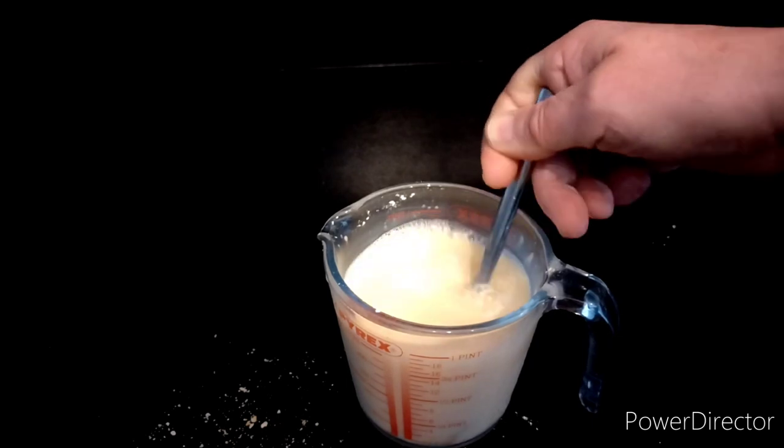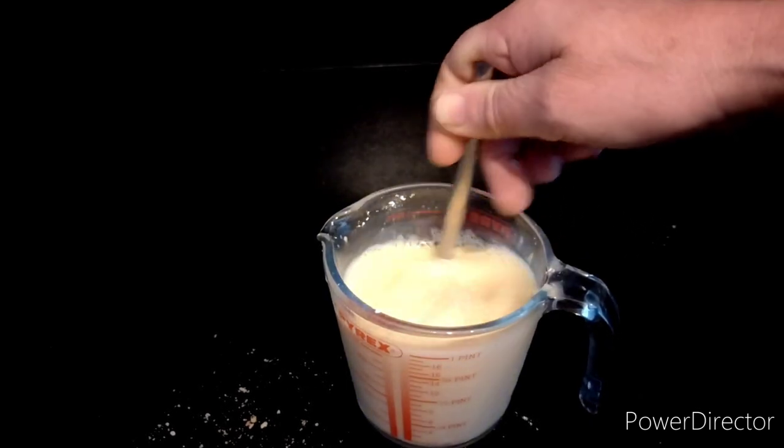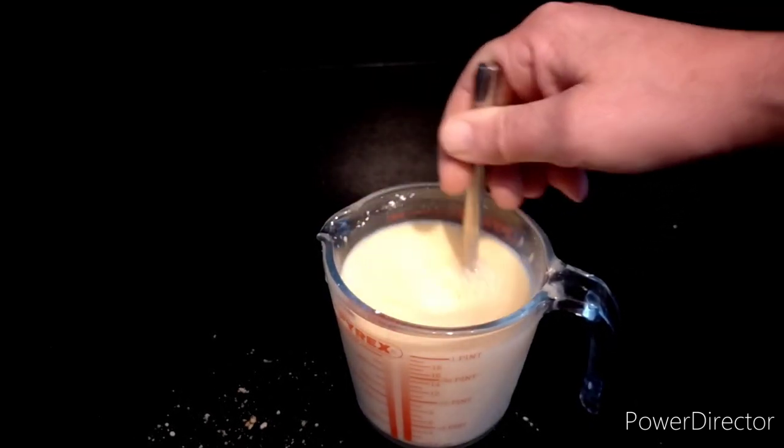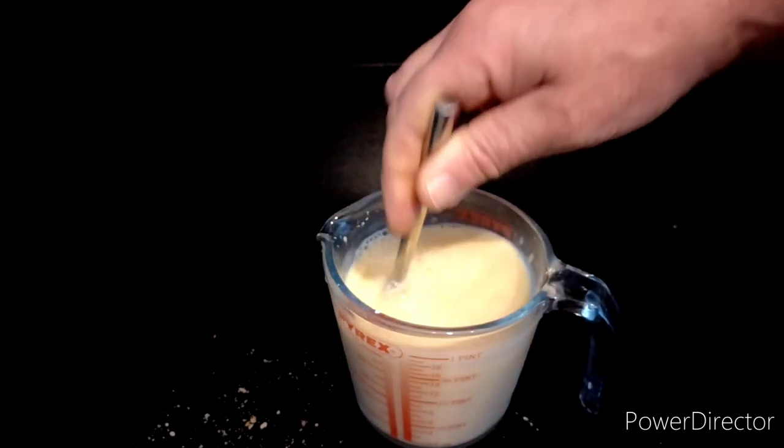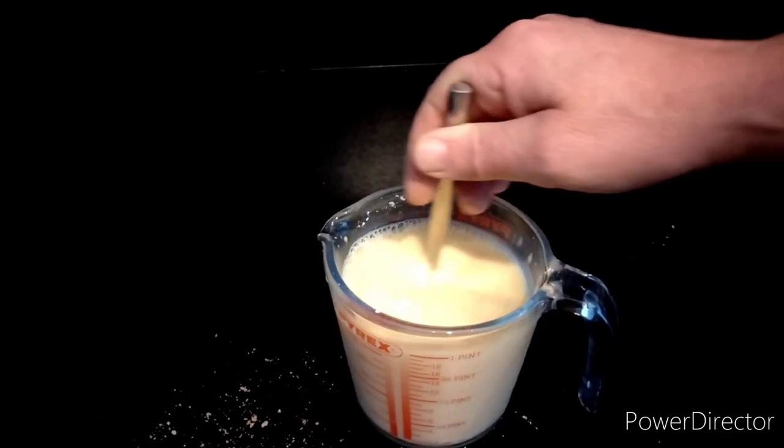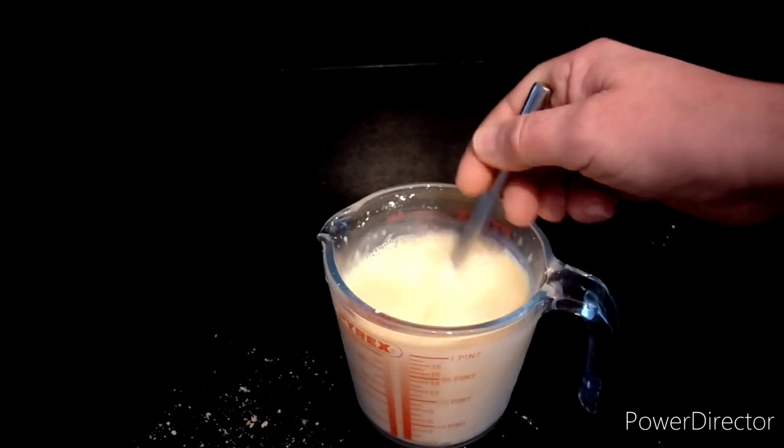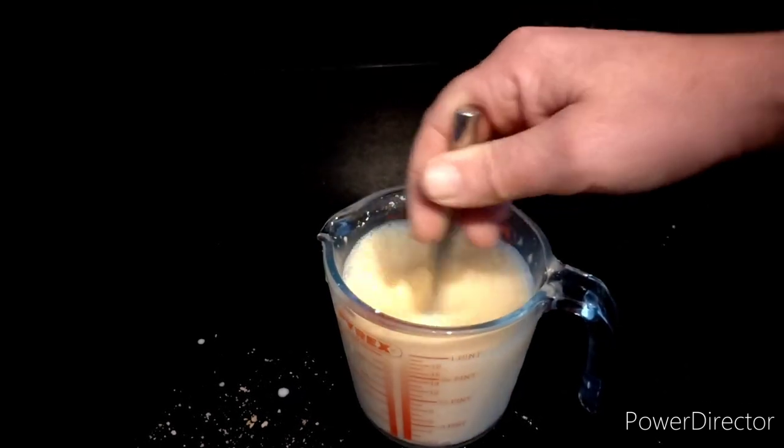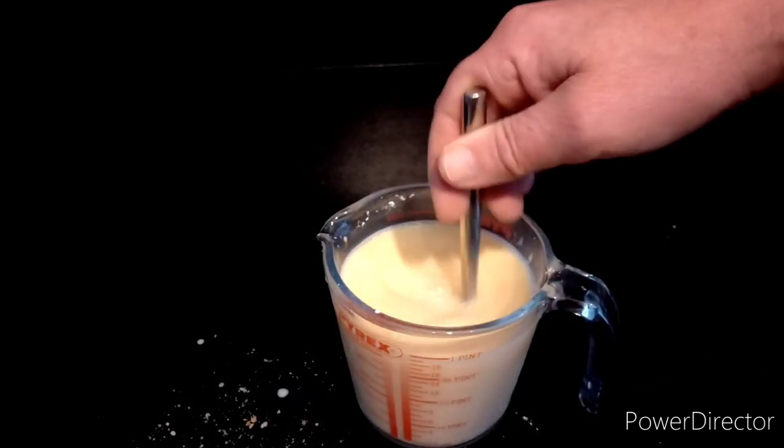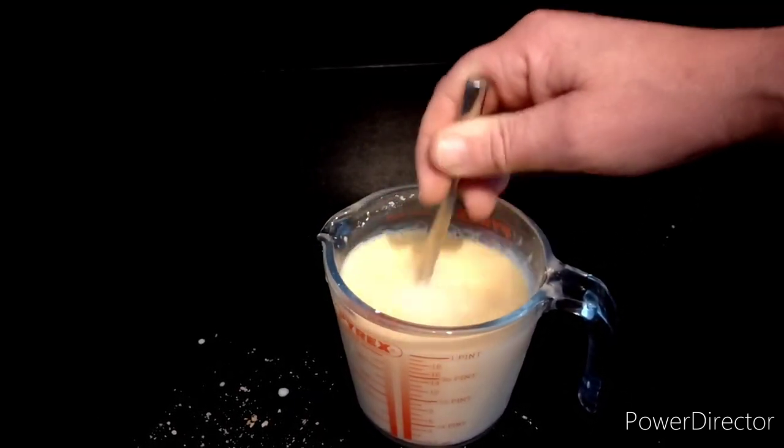So I'm giving the custard a good old stir before I pop it in the microwave. Now this will take quite a few minutes to actually warm up but that's no bother because what I'll do is I'll keep stopping, stirring, stopping, stirring. So we've got to make sure all the lumps are out. It's actually looking really good, looks like it's dissolved nicely. And then I'll let that cool down sufficiently before I can pour that on as well.